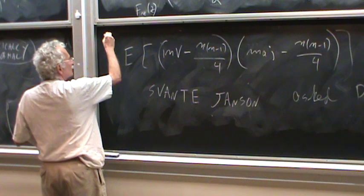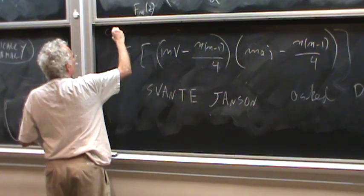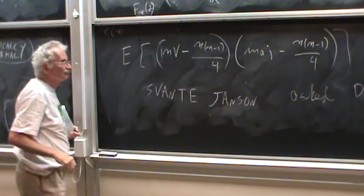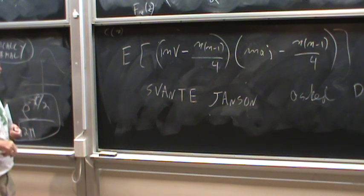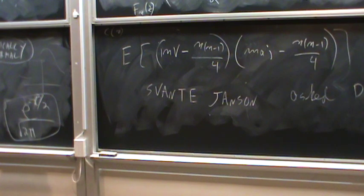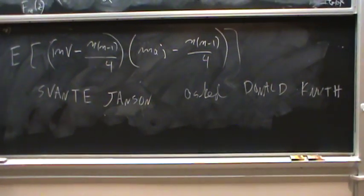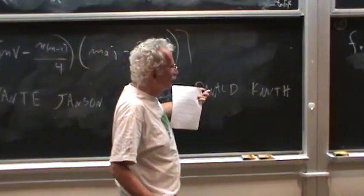Let's call it C of n. So the limit. Sorry, this is asymptotic correlation. And Donald Knuth did not have any clue.